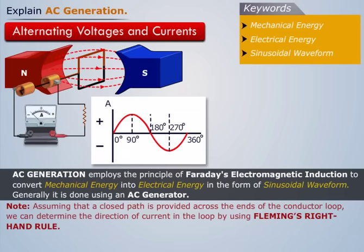Note that, assuming that a closed path is provided across the ends of the conductor loop, we can determine the direction of current in the loop by using Fleming's right-hand rule.